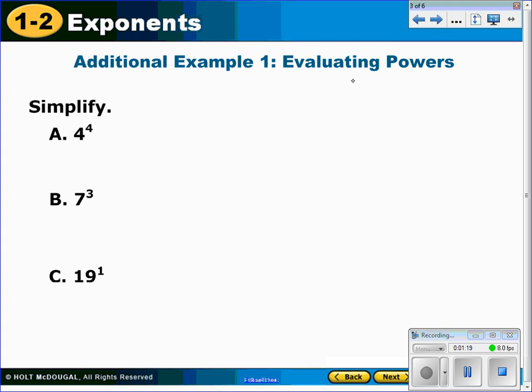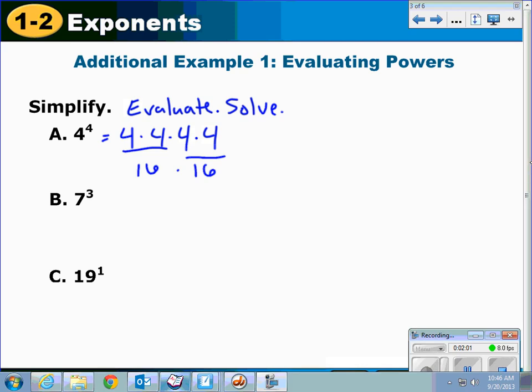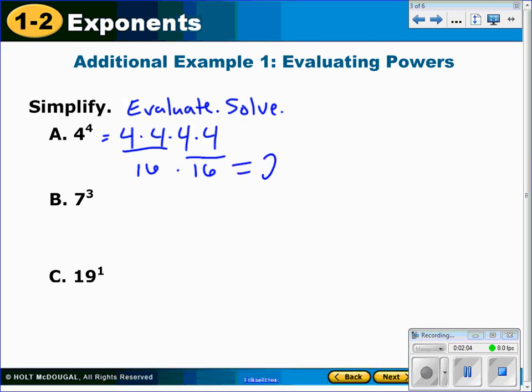So now if we look at some examples, what they're asking for us first is just to simplify. When they say to simplify it, that means we need to know what the value of 4 to the fourth power is. Another word for this might be evaluate or solve. So 4 to the fourth power would be the same as 4 times 4 times 4 times 4. If we do 4 times 4, we get 16. If we do 4 times 4 here, we'll also get 16. So really what we're doing is 16 times 16, which is 256. So therefore we've got 4 to the fourth power equals 256.